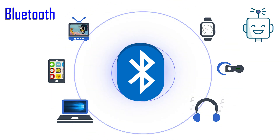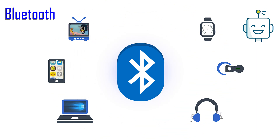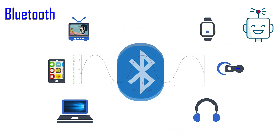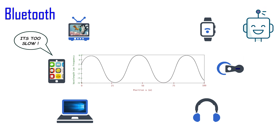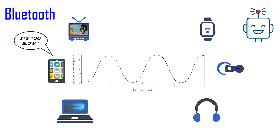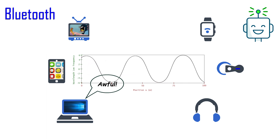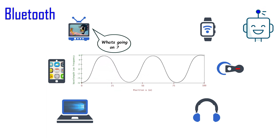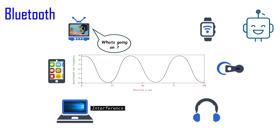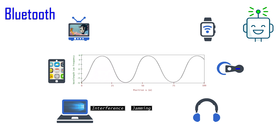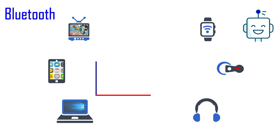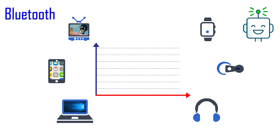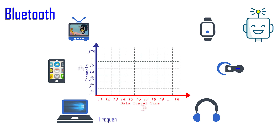So, how do Bluetooth devices communicate with each other? Conventional wireless transmission uses only one frequency with a fixed channel, like tuning into a particular radio station. This type of wireless transmission has three problems: interference, jamming, and interception. In order to address these issues, Bluetooth uses the FHSS method, which stands for Frequency Hopping Spread Spectrum.